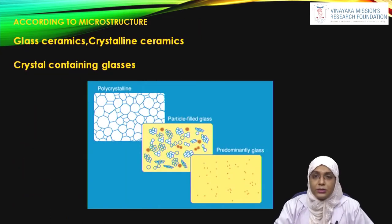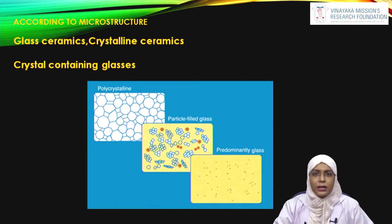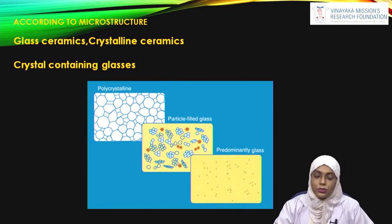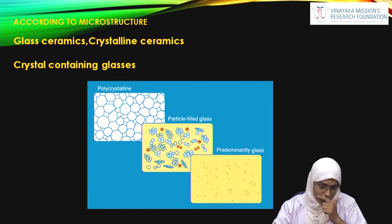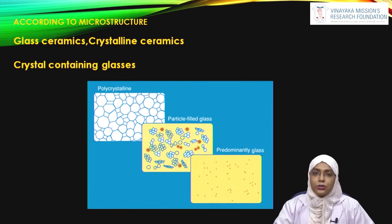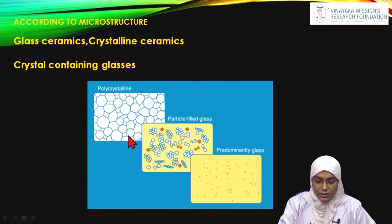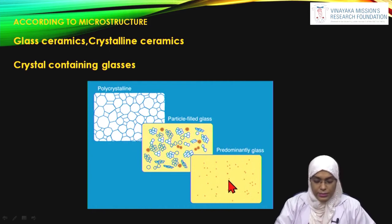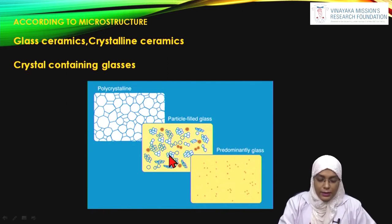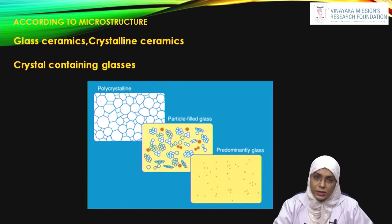Ceramics can be classified into various types based on how they are processed, their microcrystal structure, and firing temperature. I am going to limit myself to the classification based on microstructure, because this is how the strengthening of ceramics is affected. Based on microstructure, you can classify them into three types: glass, crystal, and crystal-containing glass. As you can see in the figures here, various particles in the form of crystals are added to modify the crystalline structure, and you can have fully crystalline ceramics.